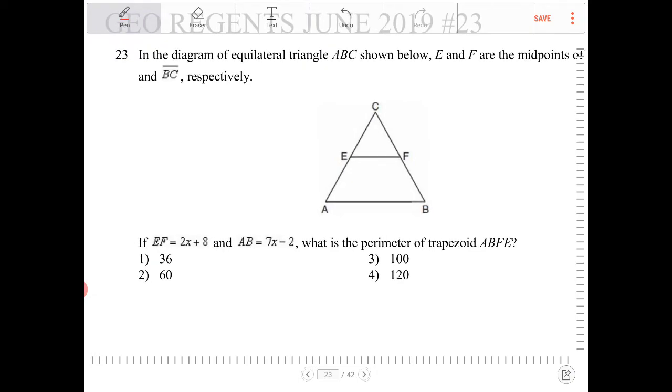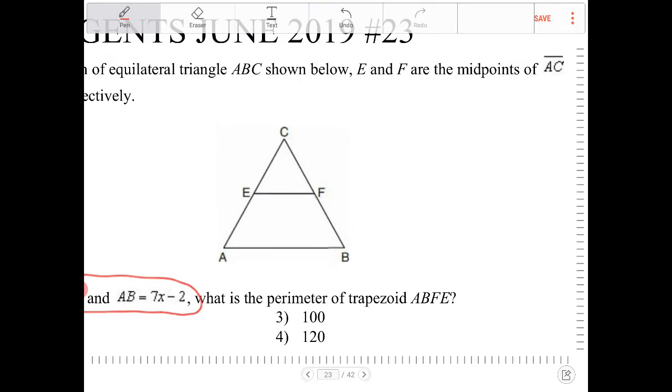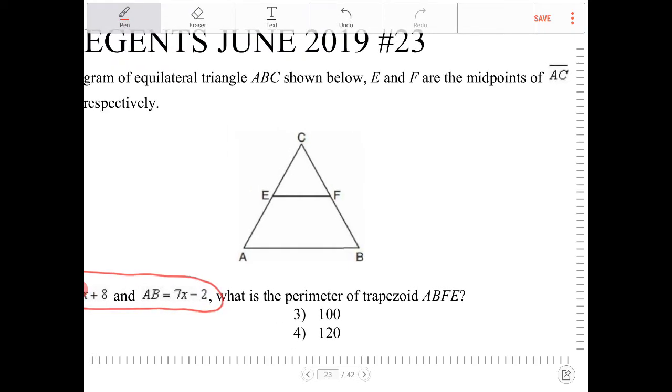I'm not going to talk about this information yet. What I am going to do is talk about the diagram here. Triangle ABC is an equilateral triangle, which means all of these angles are going to be congruent. They're going to be 60 apiece. E and F are midpoints of the side lengths, so if that's the case, then these two sides are going to be the same, and these two sides are going to be the same.